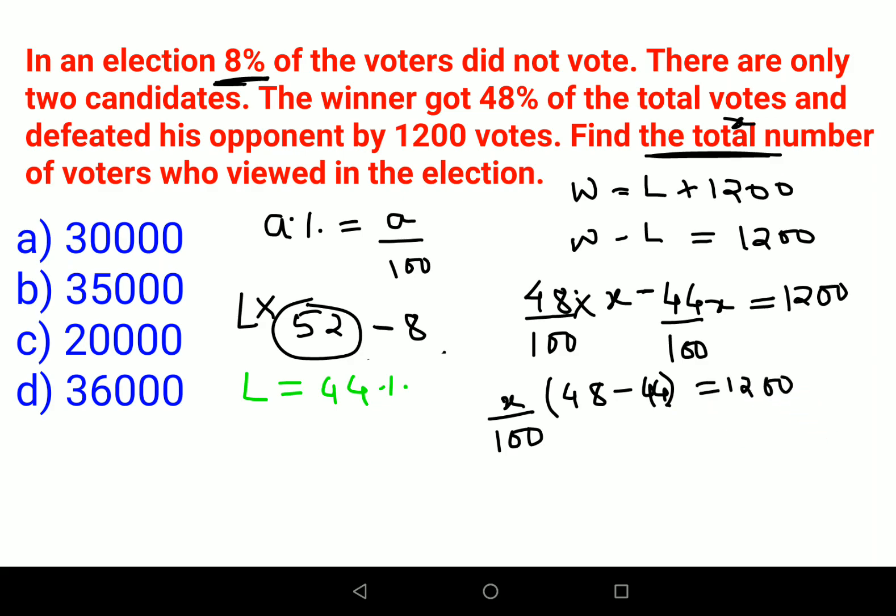Now what happens is x into 48 minus 44 is 4, and let's take the 100 on the other side, it becomes 1, 2, and 4 zeros. So now in order to find the value of x, we'll divide both sides by 4. The 4 is canceling and here we get 3 and then 4 zeros.